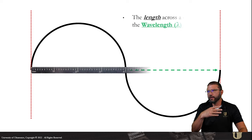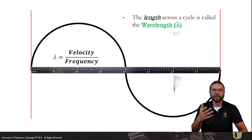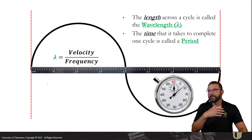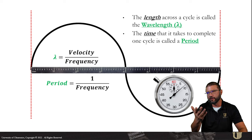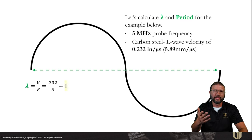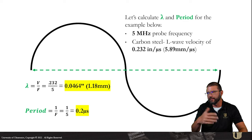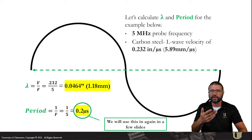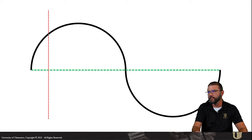We've got a cycle. The length across a cycle is called a wavelength. The time that it takes to complete one cycle is called a period, and there's two very simple math formulas there. V over F for wavelength and one divided by the frequency for your period. I've got an example here, five meg carbon steel L wave. We've got a wavelength of about 46 thousandths or 1.2 millimeters. And we've got a period of 0.2 microseconds. We'll remember that 0.2 microseconds. We're going to use that in a few slides.